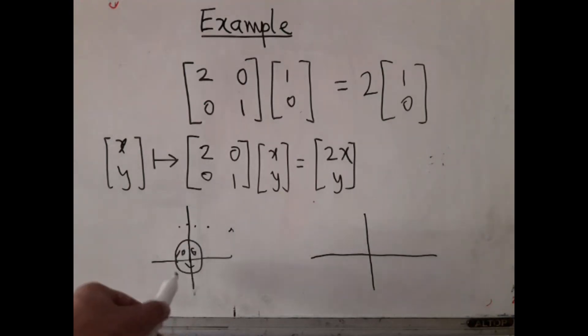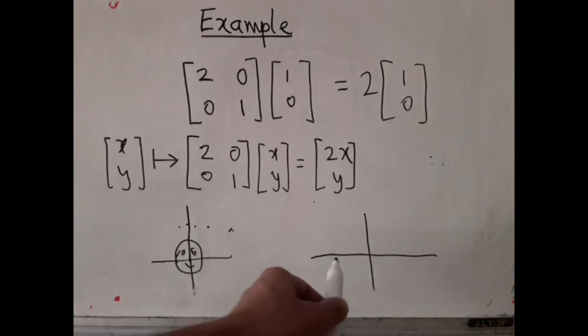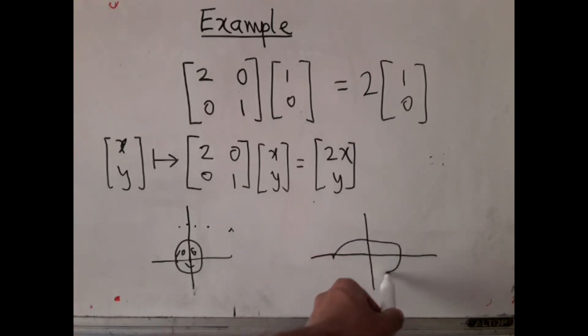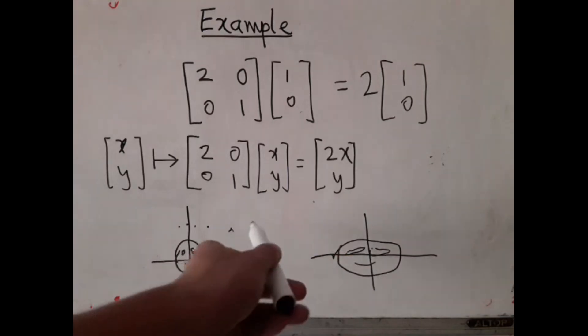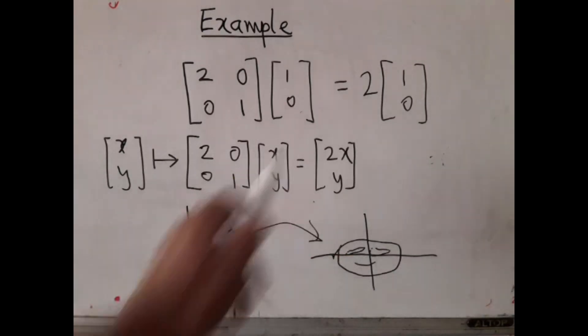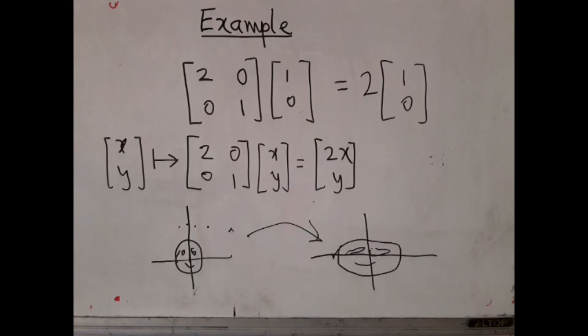So how will this picture change? This picture will just fatten out. It will not become taller, but it will just fatten out to double the length. So it is roughly, it will be like this. So that is the effect of this function. X, Y going to 2X, Y.